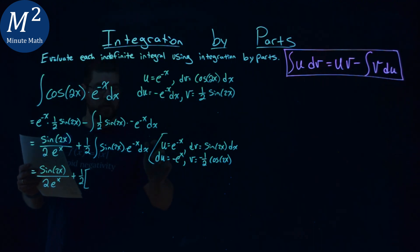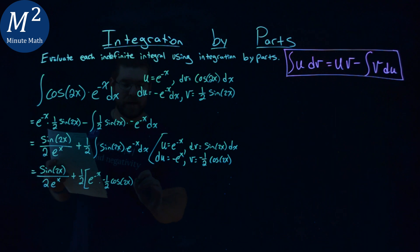u times v. u, in this case, is e to the negative x power times my v value, negative one-half cosine of 2x.